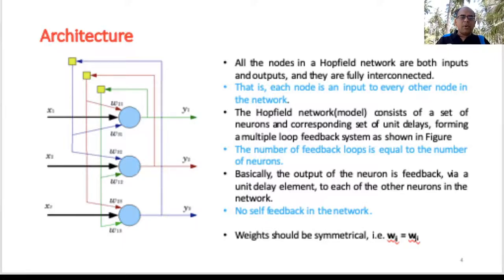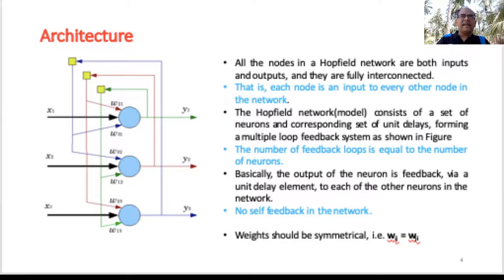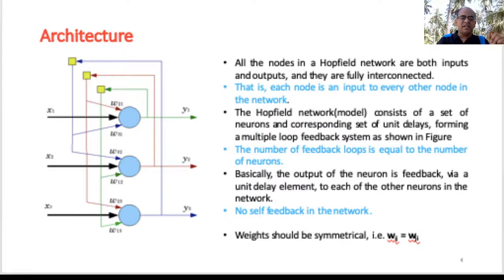The number of feedback loops is equal to the number of neurons. The output of each neuron is fed back via a unit delay element to every other neuron in the network. There is no self-feedback in the network — remember this when you design a Hopfield network. Another key property is that the weights are symmetrical in nature.